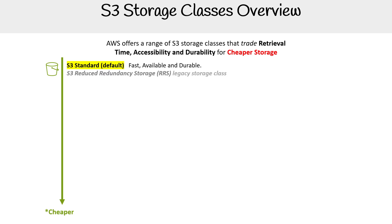The next one is S3 Reduced Redundancy Storage, and you'll notice it's grayed out because this is a legacy storage class. Its purpose was to give you a reduced cost over S3 Standard by having less redundancy. However, S3 Standard has come down in cost over time, so this class doesn't fit any modern storage scenario. It's still selectable in the AWS console, but you really should not be using it.